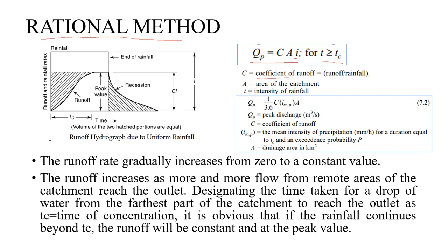This is the flood hydrograph — this is the time period of the rainfall, here the rainfall ends and here the recession occurs. TC is the time of concentration: when all parts of the basin start contributing to the runoff, that's how we define TC.